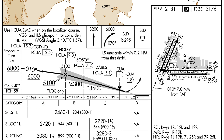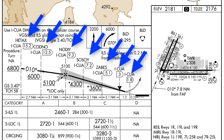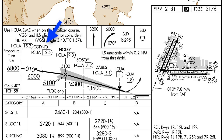Next, you will see every intersection or navigational aid along the profile of the approach which includes an altitude change or a change to the profile of the approach. In this case, you can see Condo intersection is a 6,000 foot minimum altitude. Sassoy is a 4,300 foot minimum altitude.